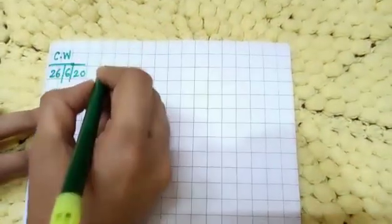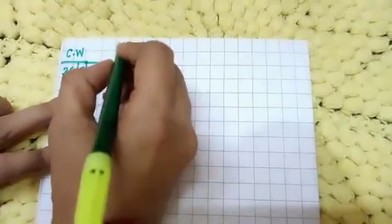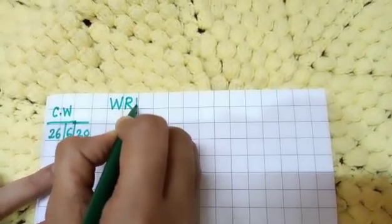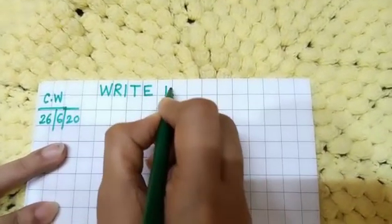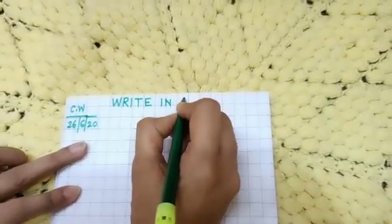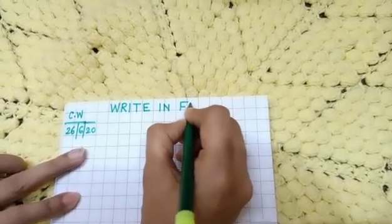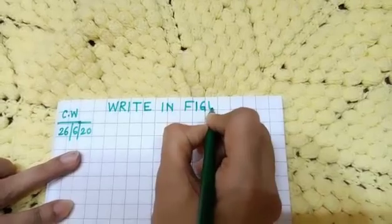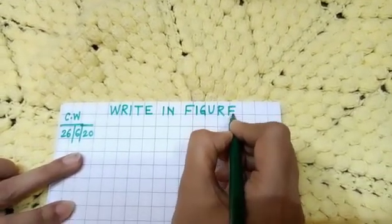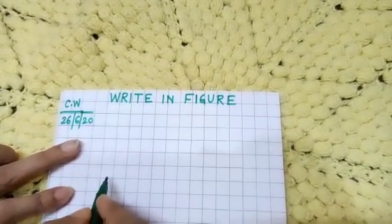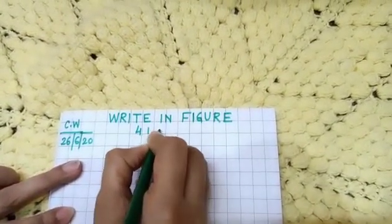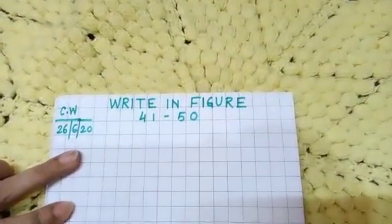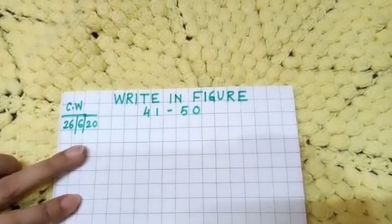Okay, now here you will write, write in figure 41 to 50. So start writing. First you write, W-R-I-T-E, write, I-N, in, F-I-G-U-R-E. Write in figure. 41 to 50. Write in figure 41 to 50.